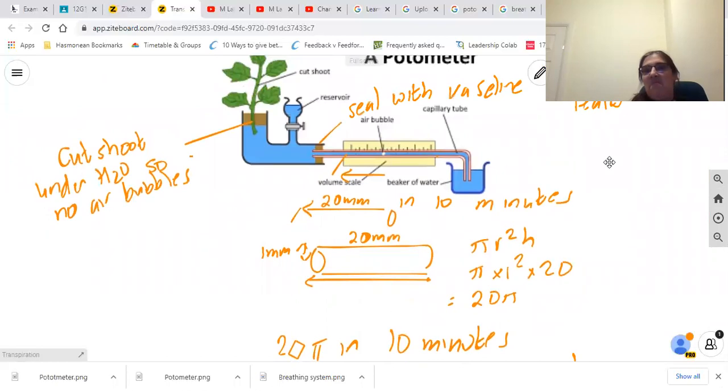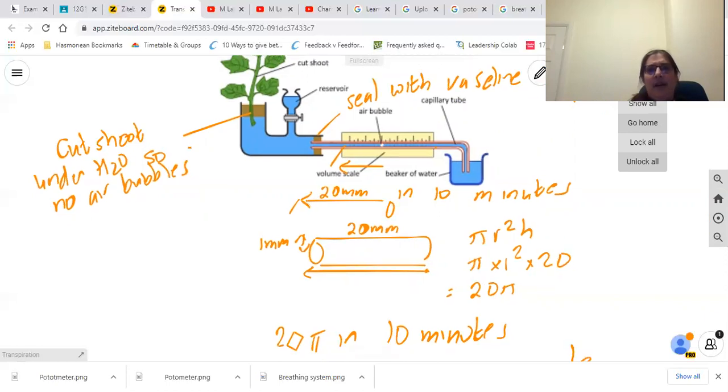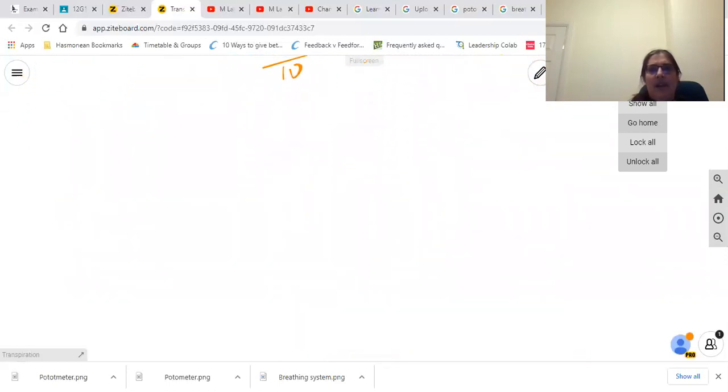You could repeat the experiment using the same species of leaf, ideally with the same number of leaves, and passing wind over it so that it's in windy conditions, or putting it under a light, or putting it in a hotter temperature to look at the effect of different conditions on transpiration. Obviously we're trying to control all of the other variables.